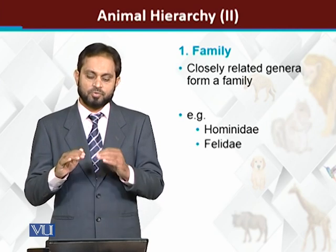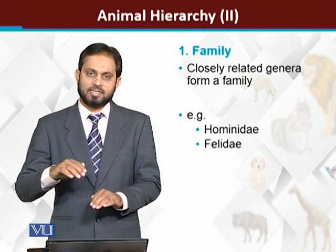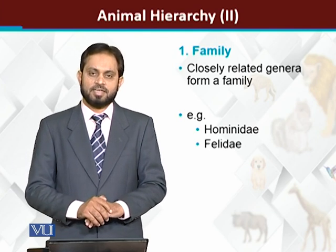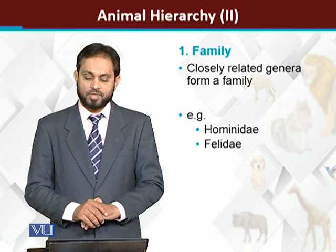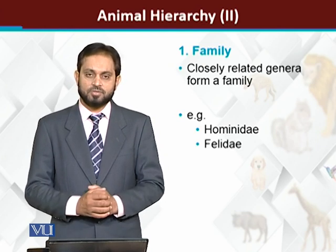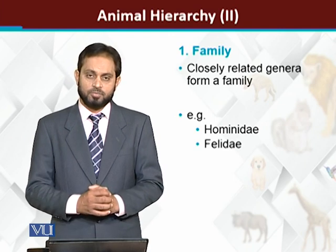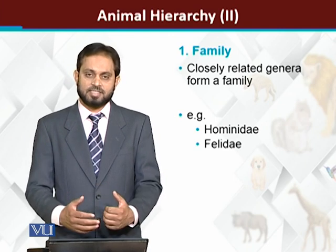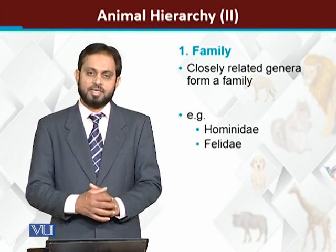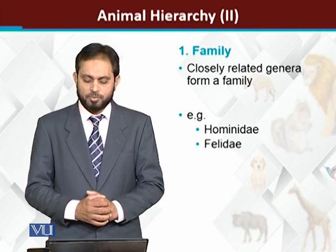The species is the smallest group, then genera, and genera form the family. For example, if we talk about humans — homo sapiens is the scientific name, homo is the genus name, and the family is Hominidae. Hominidae is the family of humans.